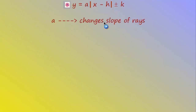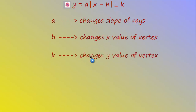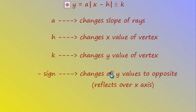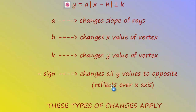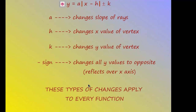'a' changes the slope of the rays; 'h' changes the x-value of the vertex, moving it right or left; 'k' changes the y-value of the vertex, moving it up or down; and the negative sign changes all y-values to their opposites — a reflection over the x-axis. These are the types of changes we'll see all year long in every new function we introduce.